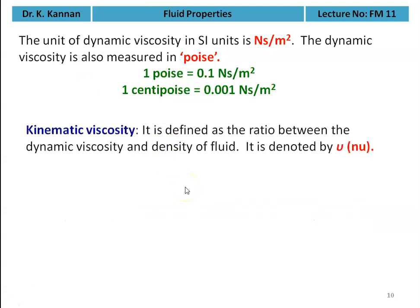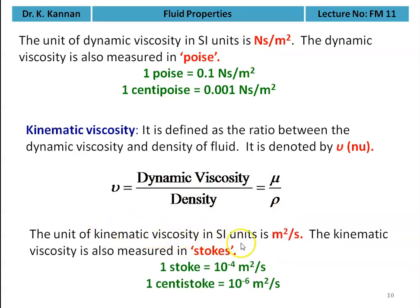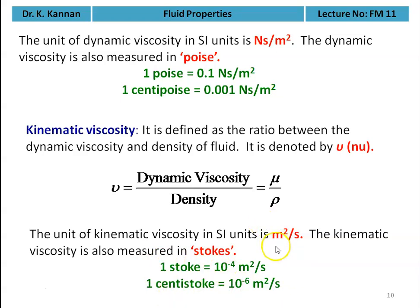Kinematic viscosity is defined as the ratio between dynamic viscosity and the density of the fluid, denoted by ν (nu). So ν = μ / ρ. The unit for kinematic viscosity is meter square per second. Kinematic viscosity is also measured in stokes: 1 stoke = 10⁻⁴ m²/s, 1 centistoke = 10⁻⁶ m²/s. In our calculations, we will use meter square per second.